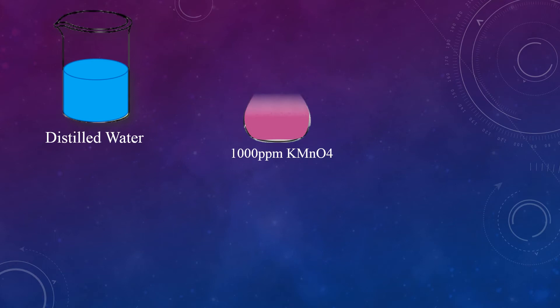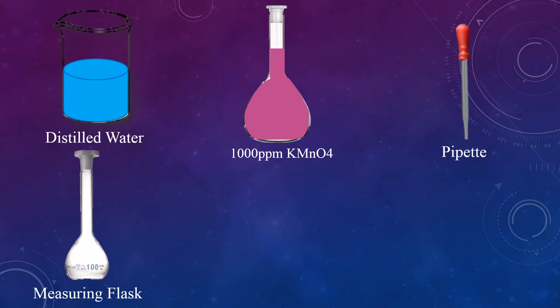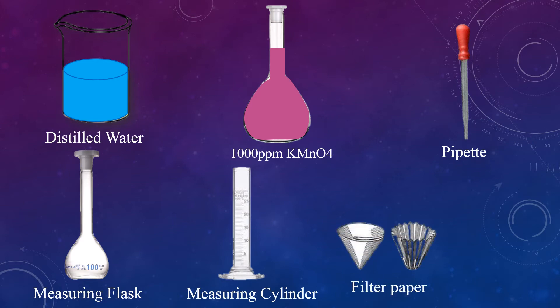Let's understand the preparation of 100 ppm solution of potassium permanganate from 1000 ppm by animation. To prepare 100 ppm solution of potassium permanganate from 1000 ppm stock solution, the apparatus required are: distilled water, 1000 ppm stock solution of potassium permanganate, pipette, 100 ml measuring flask, measuring cylinder, filter paper, and funnel.